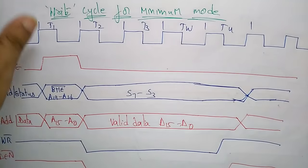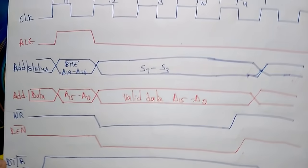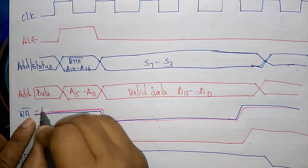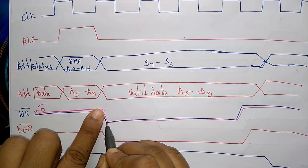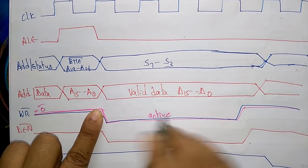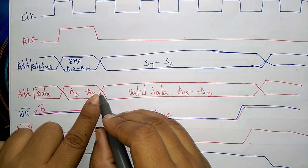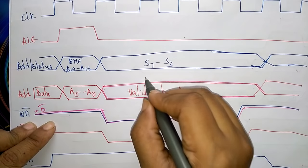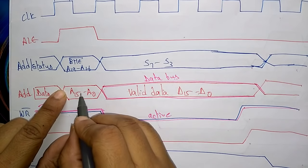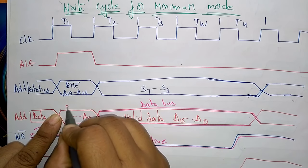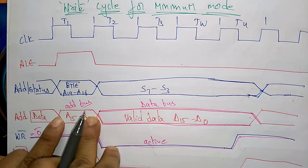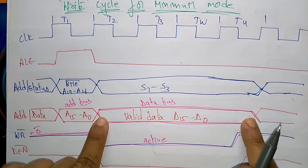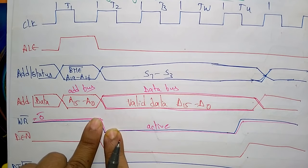Now let us see the write cycle for the minimum mode. Everything is the same, but the only difference is that instead of reading, you are writing. So WR bar is active low — WR bar goes to 0 (down), and from T2 to T4 this will be active, meaning it is writing data. During T1 the address A0 to A15 is placed on the address bus, and from T2 to T4 the valid data is placed on the data bus. Whatever valid data is placed on the data bus, that we have to write to the external devices.